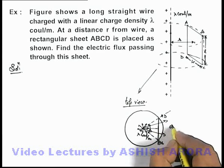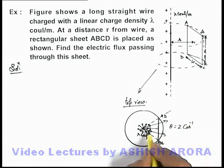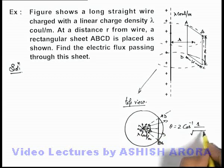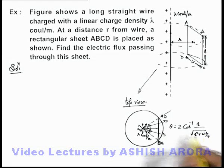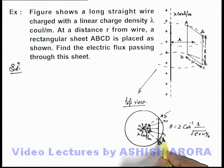And this angle theta can be calculated as twice of cos inverse r by root of r square plus w square by 4. And in this situation if this is the angle in which the electric lines are passing through the plate.